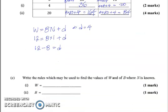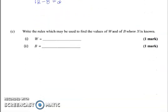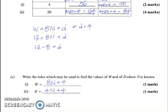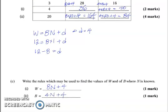Part C says: write the rule which may be used to find W and B where n is known. We already worked through that. W equals 8n plus 4, and B equals 4n plus 4. To find the number of wires, multiply the figure number by 8 and add 4. To find the number of balls, multiply the figure number n by 4 and add 4. That's the end of the question.